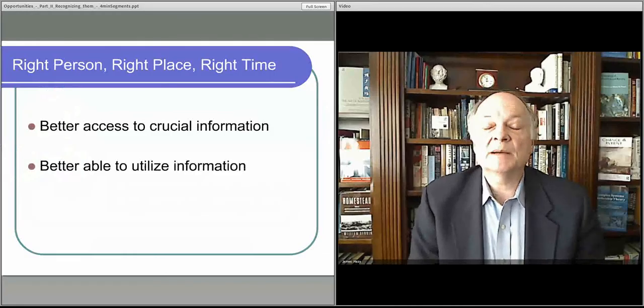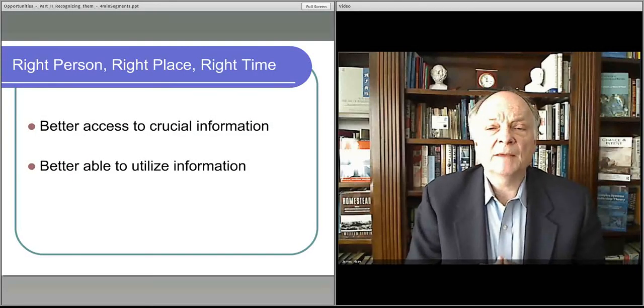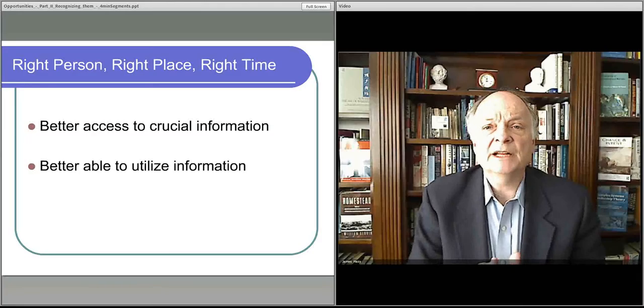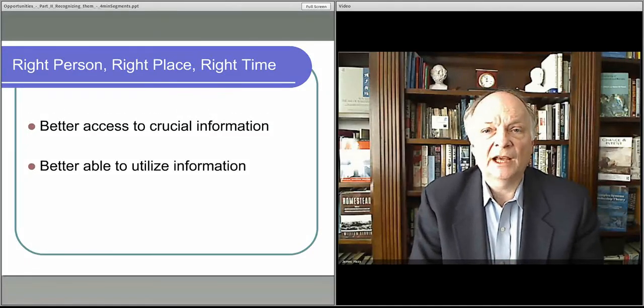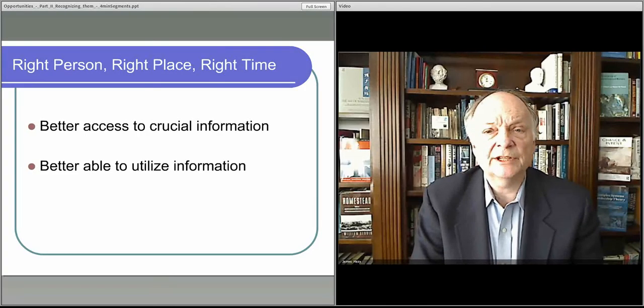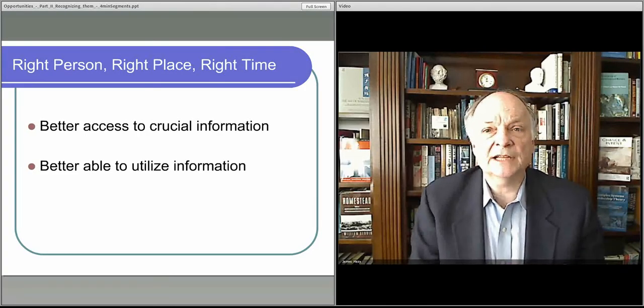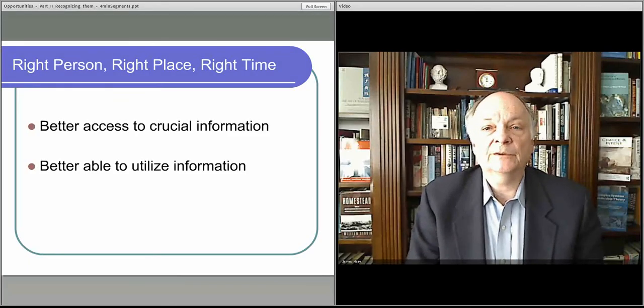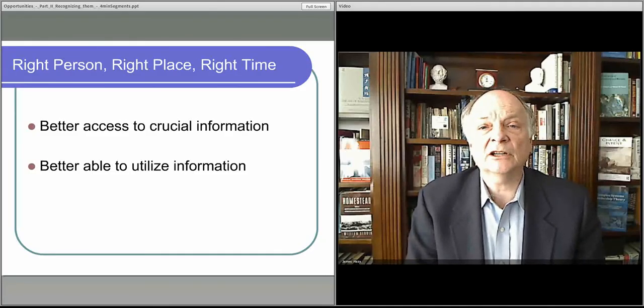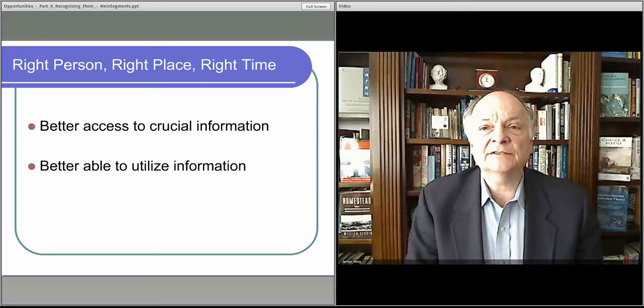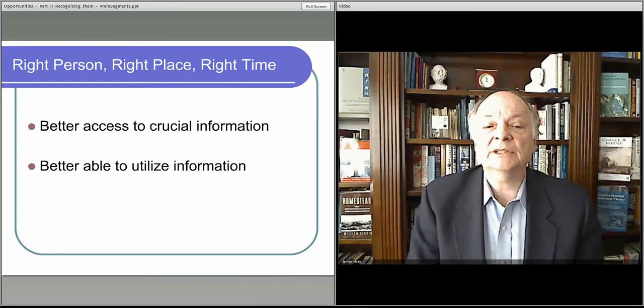First thing you've got to remember is that individuals have access to important, crucial information. Oftentimes it's their own experience or their experience of others in their groups, their affiliate groups. They understand what other people are looking for, and they also understand how the current economic system, the current way that resources are distributed, the current way technology is being used, has limitations. It's not working as effectively or as well as it possibly could.